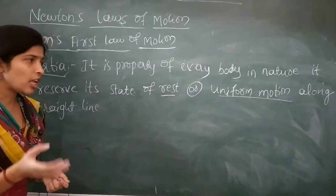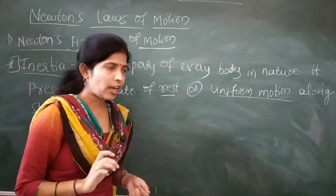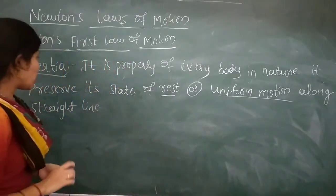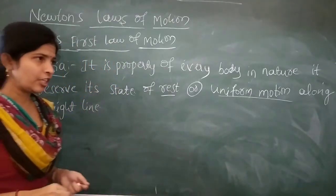This is called inertia. And in general, inertia is also called the laziness of the object — the tendency of the object to maintain its current state by itself.